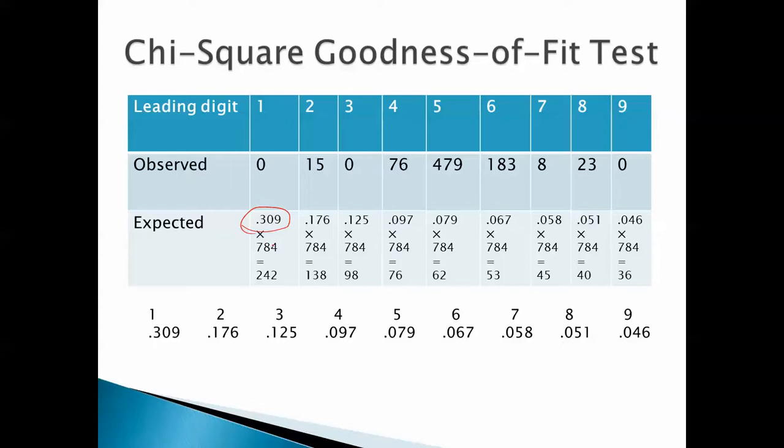Now, since we have 784 checks, and the probability that one particular check begins with a 1, we'd expect 0.309 times 784, in other words, 242 of the checks to begin with a 1. Similarly, since this is the probability that a check begins with a 2, and this is the number of checks we have, we'd expect 138 of the checks to begin with a 2, etc. So, these are what we get for our expected frequencies.